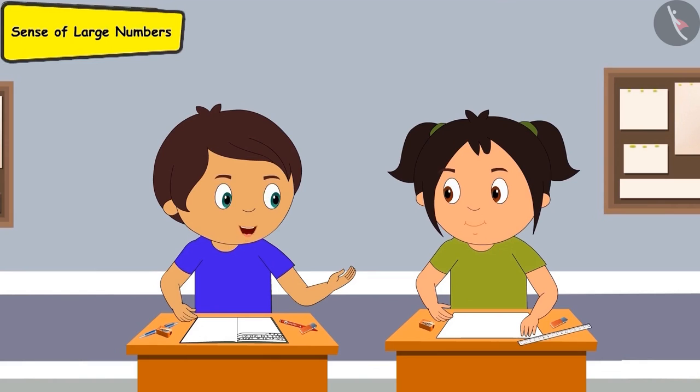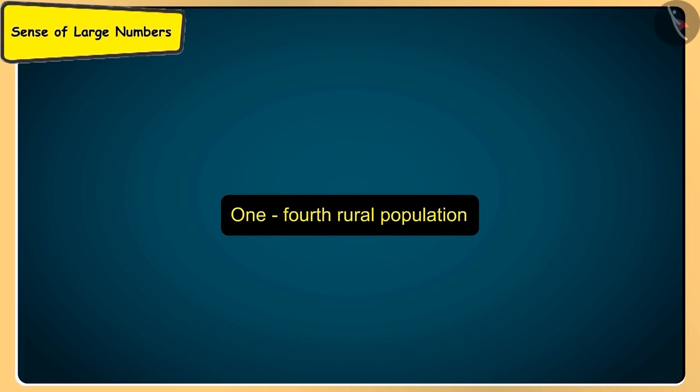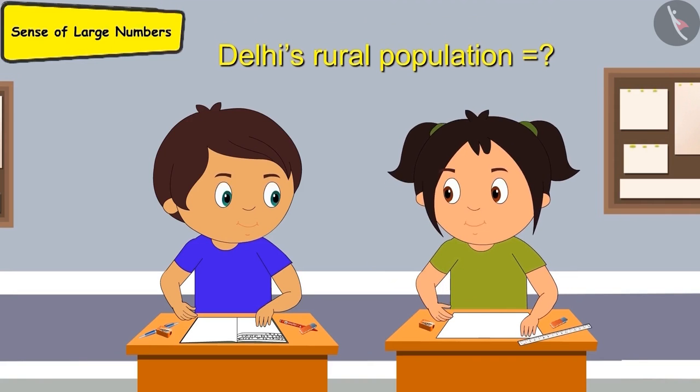Didi, it is written here that Delhi is a metropolitan city. But still, 1 fourth of the population here is rural population. Can you find out what could be the rural population of Delhi?